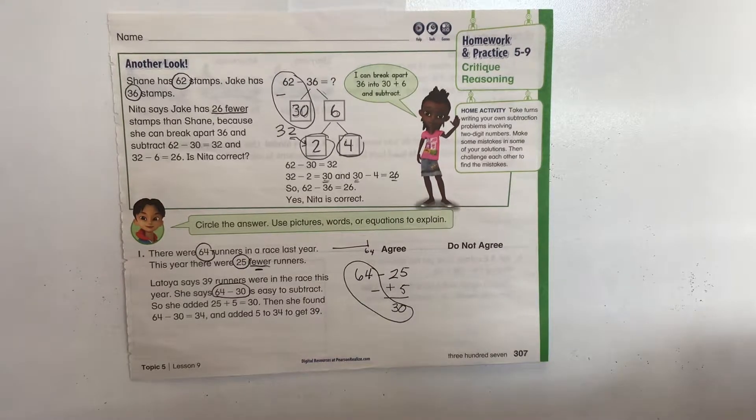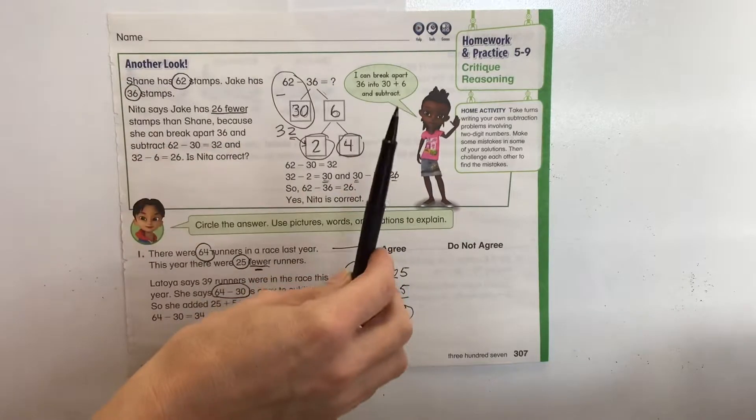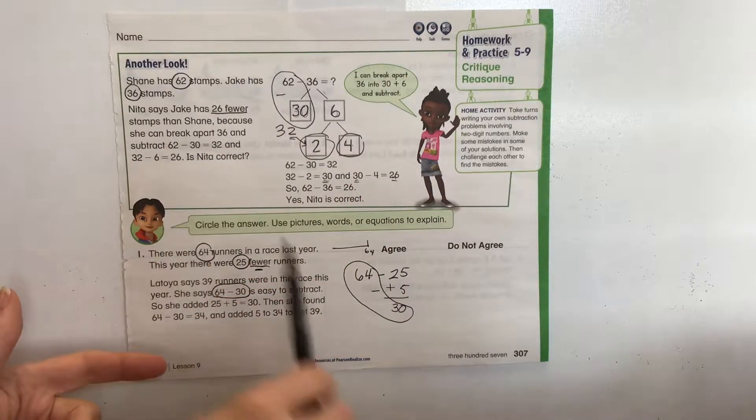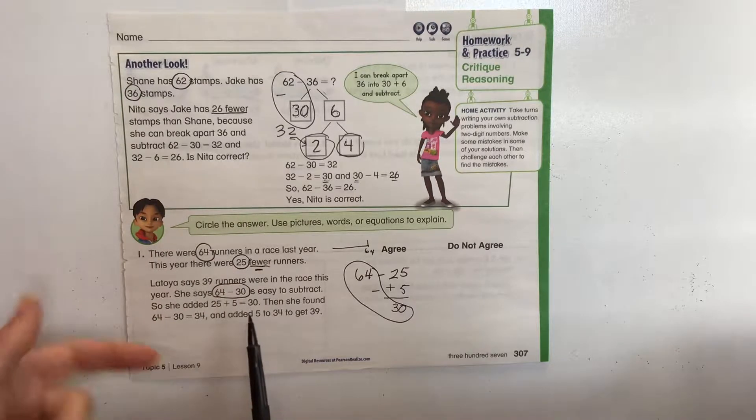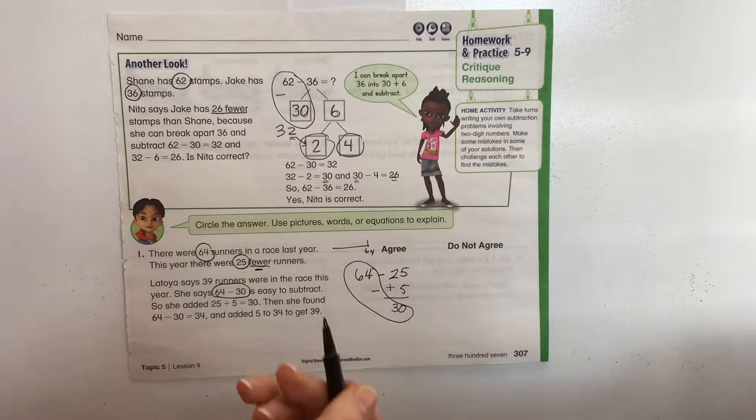All right, so this is lesson 5-9, Homework Practice on Critique Reasoning. What the students are going to be doing is seeing the thought process of another student and how they solved the problem, and if they agree or don't agree that the person got the correct answer.